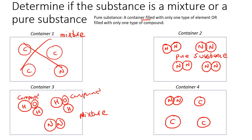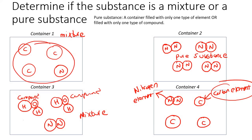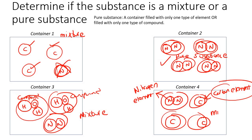Now in container four, we have a nitrogen element and a carbon element. Straight away, this can't be a pure substance because it has more than one type of element. To summarize: if everything in the container is the same — like all nitrogen — it's a pure substance. But if something different is present, like carbon mixed with nitrogen, or an element mixed with a compound, then it's a mixture.